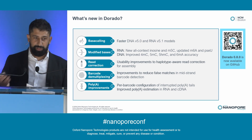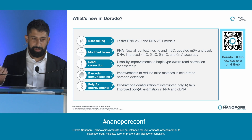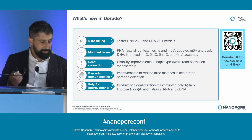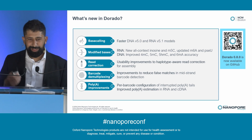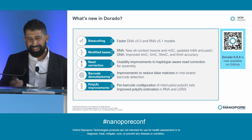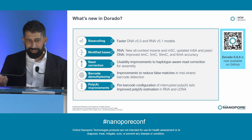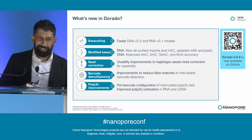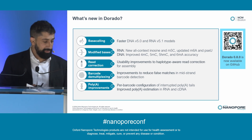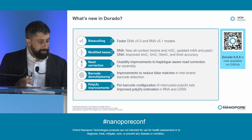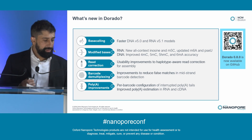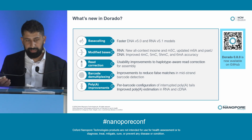We've made lots of improvements to read correction — something we were very happy to talk about at London Calling earlier this year. We've also improved barcode demultiplexing. It's not the most glamorous part of Dorado or the most exciting bioinformatics algorithm to talk about, but it is crucial to many of our customers. On the poly-A front, we spoke about poly-A calling at London Calling earlier this year and we've made lots of improvements, which I'll detail now.